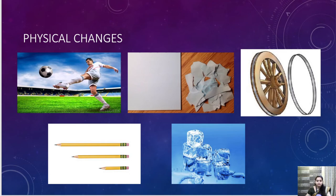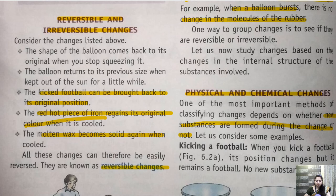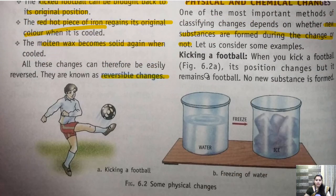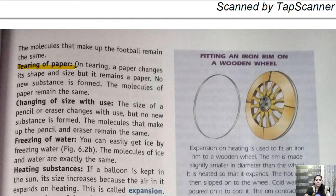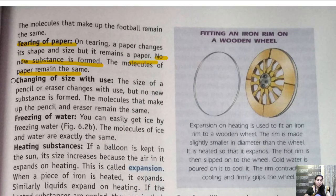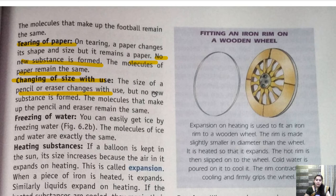Let's see what is written in the chapter. Kicking off a football — its position changes, but it remains football and no new substance is formed, so it is a physical change. Tearing of paper — no new substance is formed, the molecule of paper remains the same, so it is a physical change. Changing the size with use — the size of a pencil or eraser changes with use, but no new substance is formed, so it is a physical change.